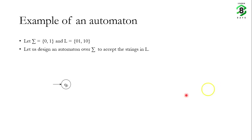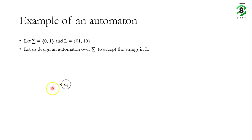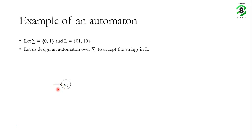The machine starts from an initial state — before we provide any input to the machine, it is in a state called the initial state. The initial state is indicated by an incoming arrow without a label on the arrow. So if you see a state, represented by a circle with an incoming arrow without anything written over it, you should understand that this is an initial state.